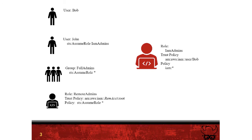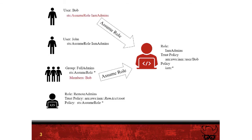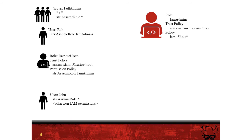The role named Remote Admins has been granted to people from a different account — not the same account IAM Admins is in — the ability to assume any role within this AWS account. But once again, they are not Bob and therefore cannot assume the role. So currently no one in the account can assume IAM Admins. For that to change, either Bob would need to be granted the STS AssumeRole permission for IAM Admins or all roles, or Bob would need to become a member of Full Admins.